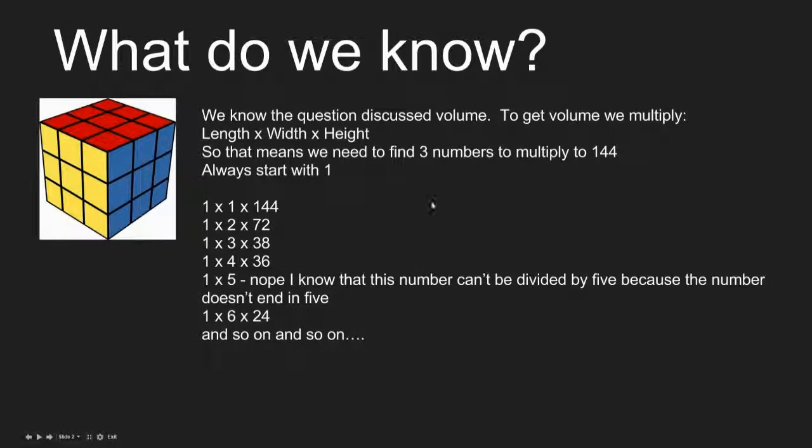So what do we know? We know the question discusses volume. To get volume we multiply length times width times height. So that means we need to find three numbers that multiply to 144, so we always start with one.